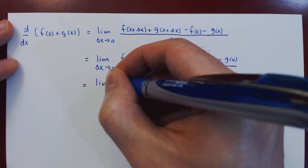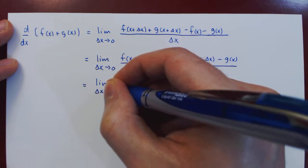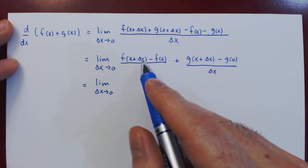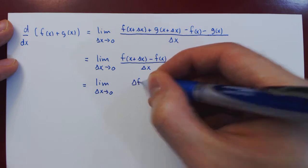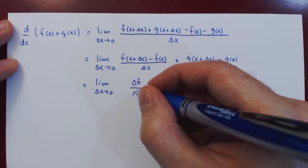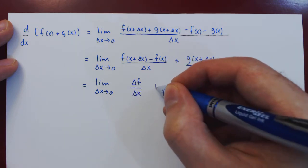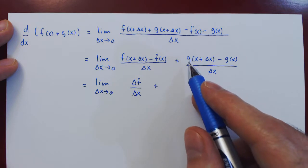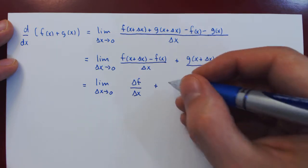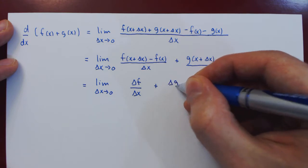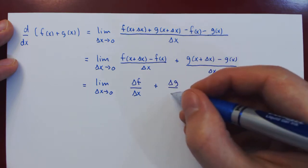And we can now write this much more concisely as f of x plus delta x minus f of x is simply the change in the function f versus the change in x. Plus, well, same for g of x plus delta x minus g of x is the change in the function g, and again over delta x.